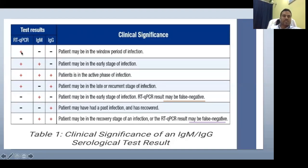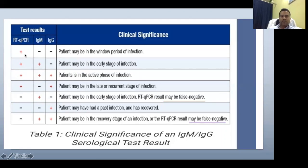If PCR is positive but IgM and IgG are negative, only the virus is in the body — the patient may be in the window period with no symptoms. PCR alone identifies the patient as infected. When IgM starts developing, the patient is in the early stage of infection. If PCR, IgM, and IgG are all positive, the patient is in the active phase of infection.